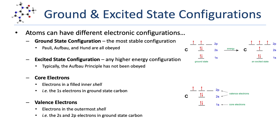The last distinction I want to cover is core electrons versus valence electrons. Core electrons are electrons inside an inner filled shell. For carbon in the ground state, the first shell has only the 1S orbital, which is filled — so those two electrons in the 1S orbital are core electrons, and that orbital is a core orbital. Valence electrons are electrons in the outermost shell. For carbon, the second shell has four orbitals total and they're not all filled, so all four electrons in the second shell are considered valence electrons, and those orbitals are valence orbitals.